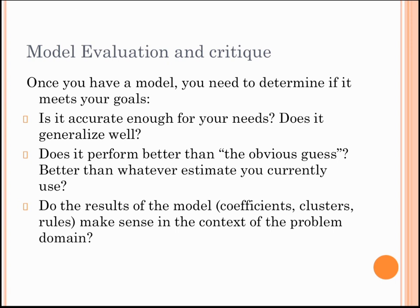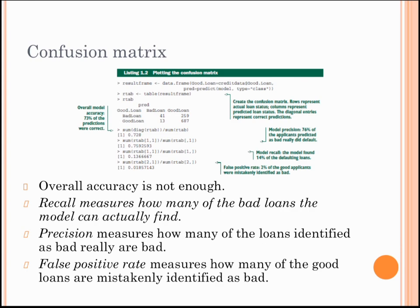The next stage is model evaluation and critique. Once we have a model, we have to determine if it meets our goals: Is it accurate enough? Does it generalize well? Does it perform better? Do the results make sense in the context of the problem? One way to evaluate this is by using a confusion matrix. Here we have a confusion matrix of good loans and bad loans, where the diagonal entries represent the correct predictions.